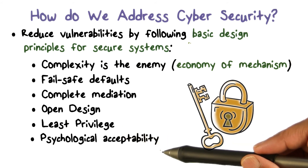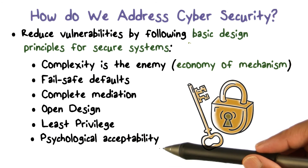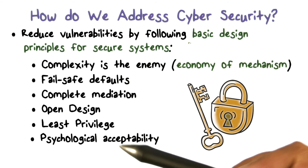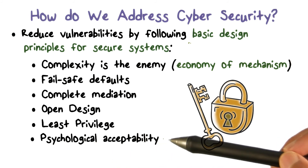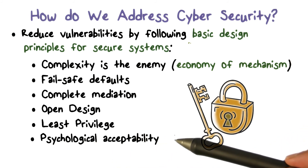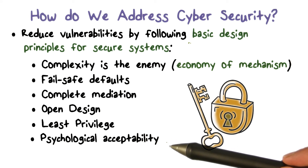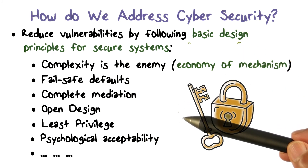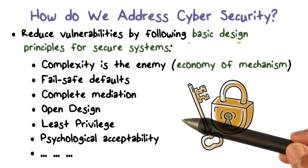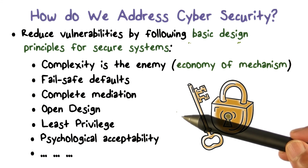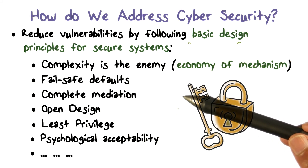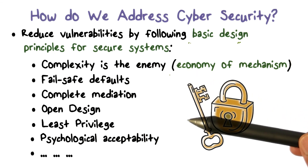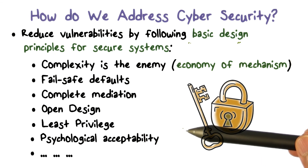People are the weak link when it comes to security, because we expect people to do something that doesn't come naturally to them. Psychological acceptability says don't ask people to do things that put excessive burden on them. There are a number of these design principles — they come from a classical paper called 'Design Principles for Secure Systems.' You'll have a link to that paper; at least read the design principles section. For each principle, we should understand how it enhances or improves cybersecurity.